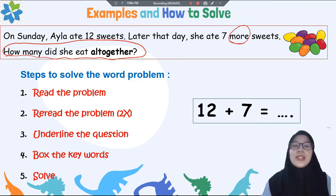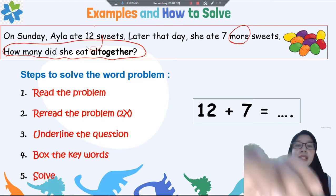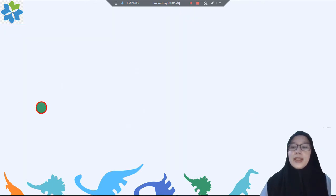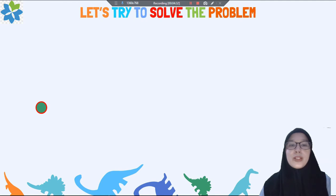And then after that let's try to solve this problem. Kalau sudah paham dengan soalnya, sudah tahu apa yang harus dikerjakan, kemudian kita lanjutkan untuk mengerjakan. First is find the numbers in the story. We find 12 and 7, right? Karena kita sudah tahu bahwa ini soal penjumlahan, maka kita tuliskan dalam bentuk kalimat matematikanya like this: 12 plus 7. And now please look at how to solve this problem.